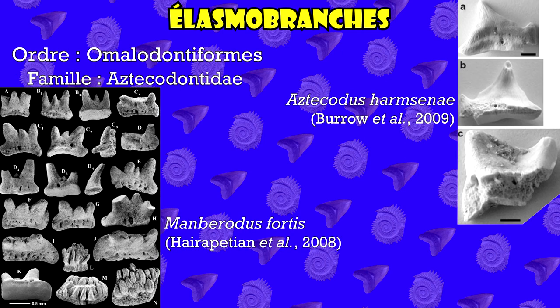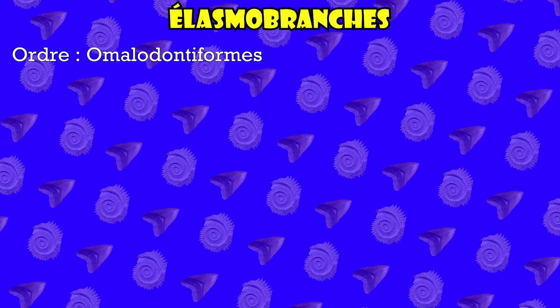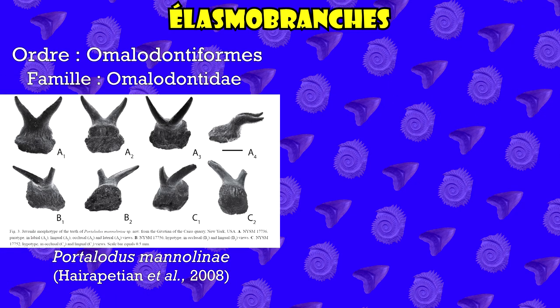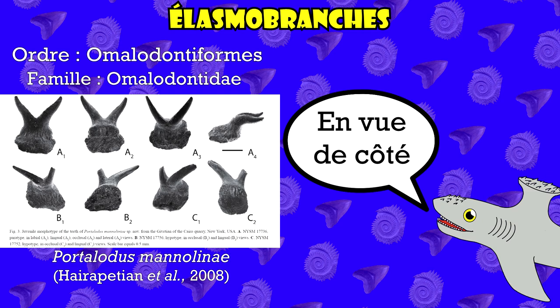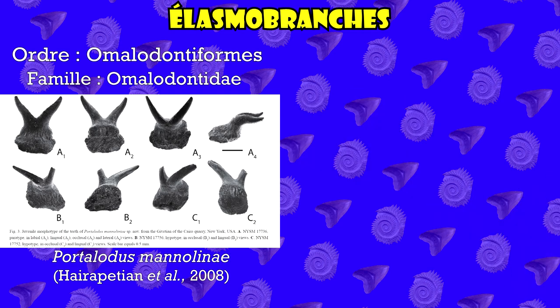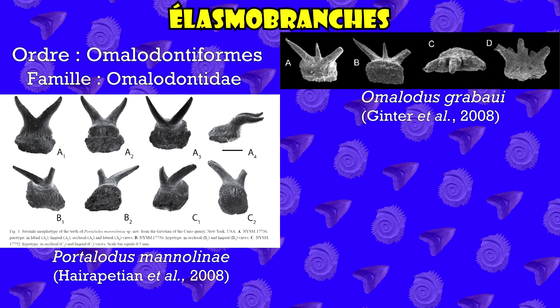La première famille possède des dents avec une racine subrectangulaire sous la couronne et comporte des genres tels qu'astéchodus et mambérodus. La famille des homalodontidées est représentée par plusieurs genres, dont portalodus qui possède des dents bifides, dont les cuspides sont divergentes, courbées, voire sigmoïdales en vue mésiale, tout en étant dépourvues de cuspides intermédiaires. On retrouve également homalodus, dont les dents possèdent trois cuspides avec une base plutôt carrée, et de temps en temps des petites cuspides intermédiaires portant le nombre de cuspides à cinq.